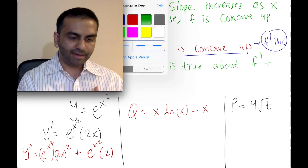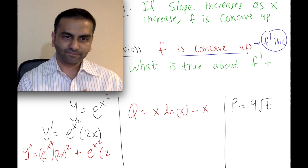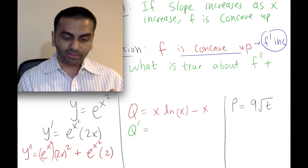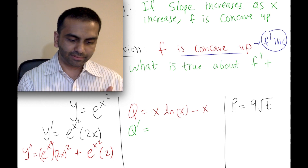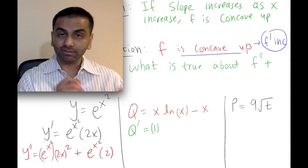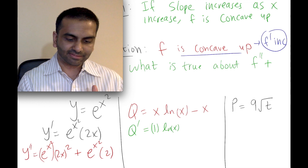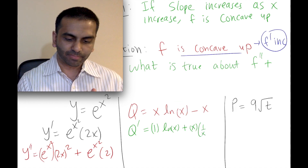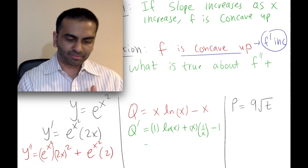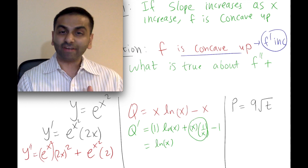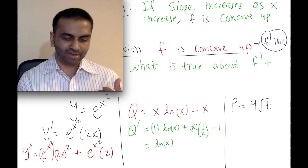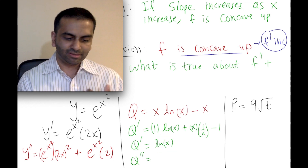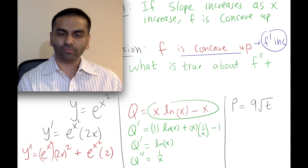For the next problem, find the second derivative of q = x·ln(x). Using the product rule for q': derivative of x is 1, times ln(x) as is, plus x as is times derivative of ln(x) which is 1/x. That gives ln(x) + x·(1/x) = ln(x) + 1. Then subtract the derivative of x, which is just 1, leaving q' = ln(x). So the second derivative is just the derivative of ln(x), which is 1/x.